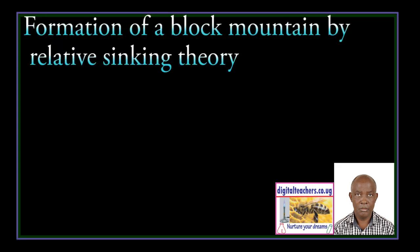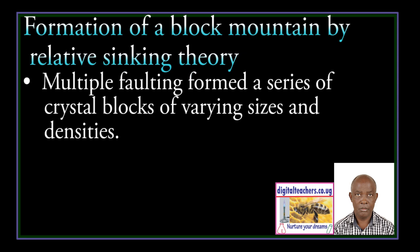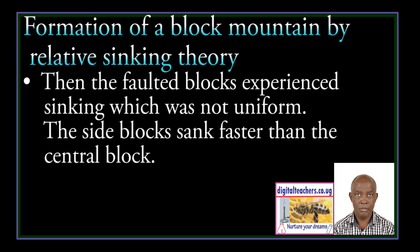Formation of Block Mountain by relative sinking. Multiple faulting formed a series of blocks of varying sizes and densities. Then the faulted blocks experienced sinking which was not uniform — the side blocks sank faster than the central block.